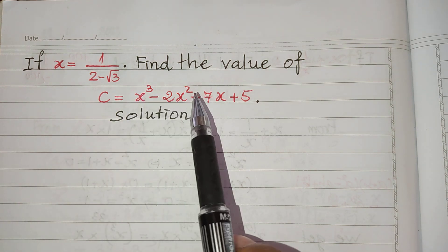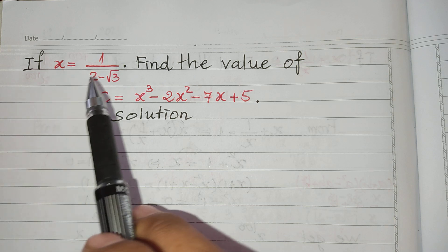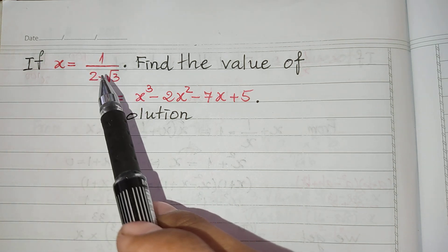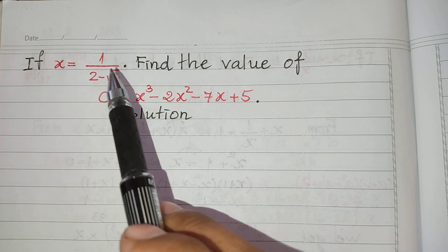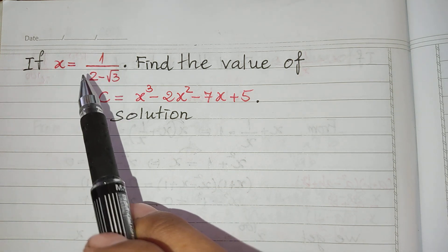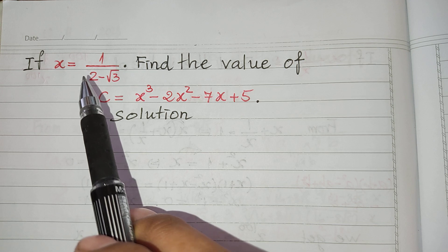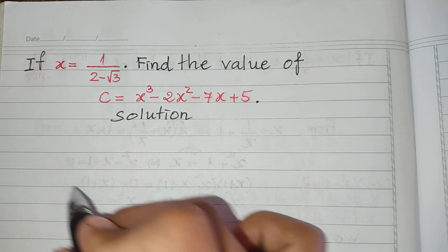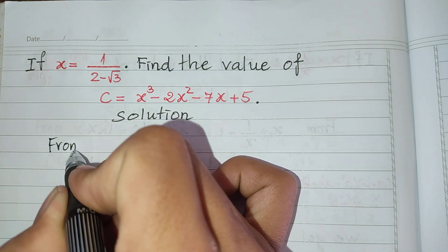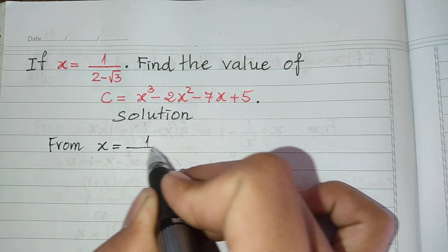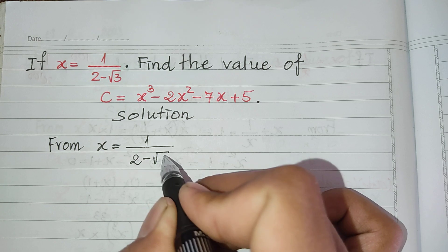To find the value of this expression, we may use the value of h. But now, the value of h contains a radical in the expression. So now we must simplify it to a form that we can substitute into the expression. So, from h equals 1 divided by 2 minus square root 3.